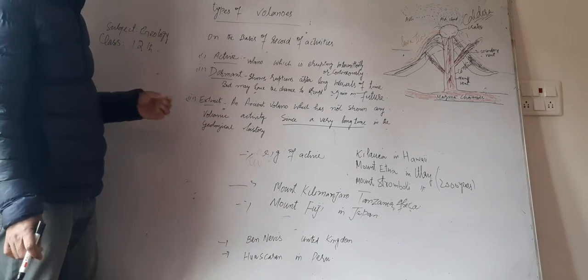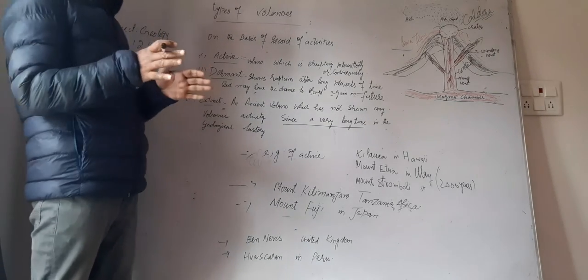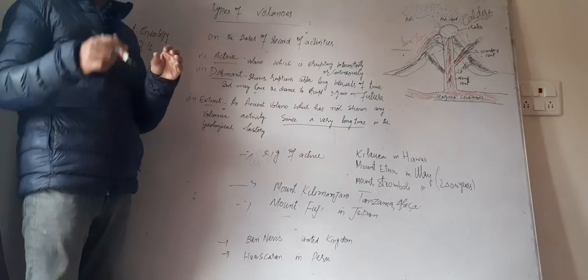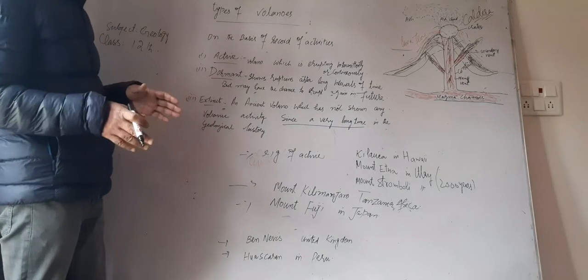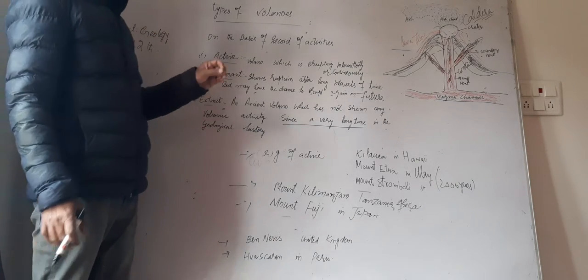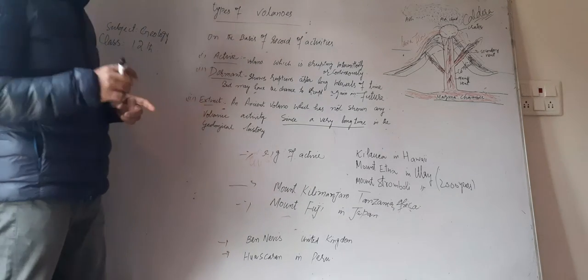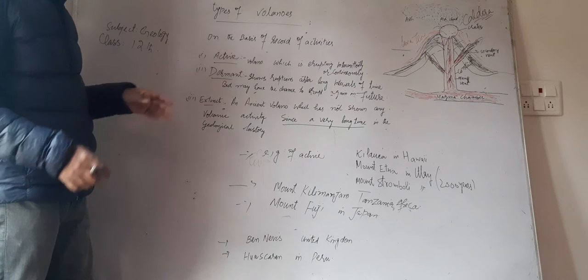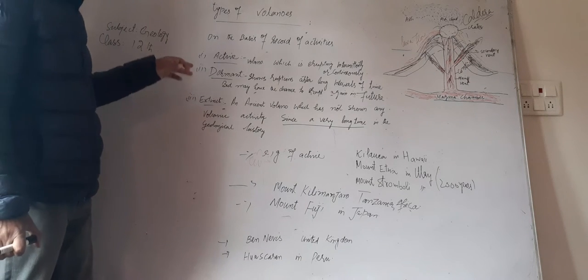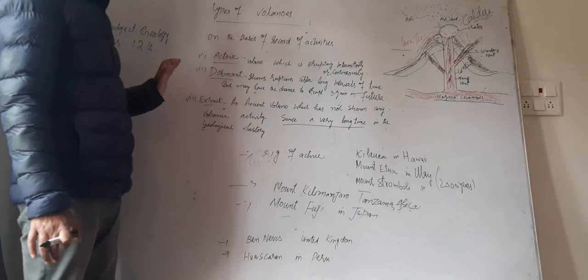So this is the dormant. The next is extinct. Extinct is a type of volcano which is an ancient type of volcano which has not shown any eruption or volcanic activity in a very long time. So in the geological history, when a volcano does not show any volcanic activity from a very long time, it can be put into that type or category of extinct volcanoes.